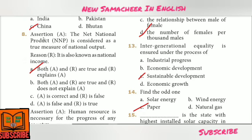Eighth question: Assertion and Reason type. Assertion A: The net national product is considered as a true measure of national output. Reason R: It is also known as national income. Answer Option A: Both A and R are true and R explains A.